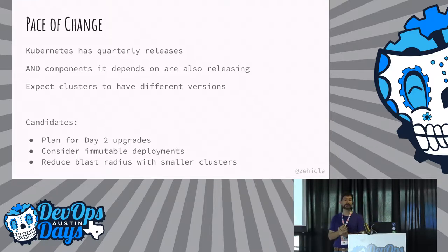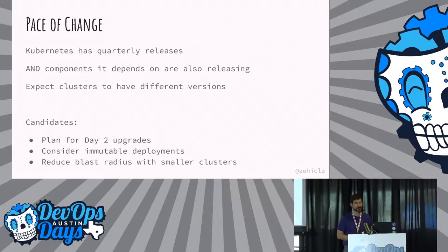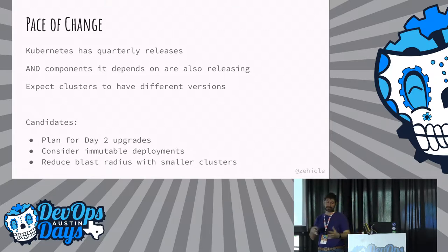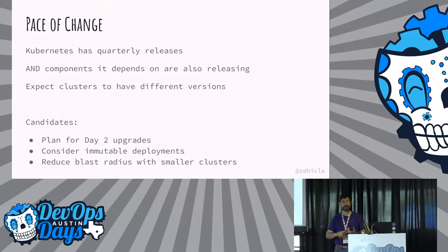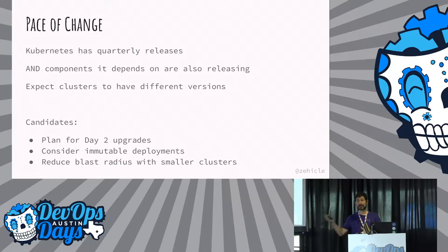Pace of change: Kubernetes does quarterly releases. You should be prepared to take them — they have bug fixes, patches, and security fixes. Do not assume you're going to take a release and run it for years; plan to be doing continuous deployment of that platform infrastructure. It's not just about the thing you're deploying — it's about the dependency graph under it. Your operating system patches, Docker itself, the networking pieces — they all have their own release cycles. It's not just that Kubernetes is every quarter; all the pieces around it have their own versioning.